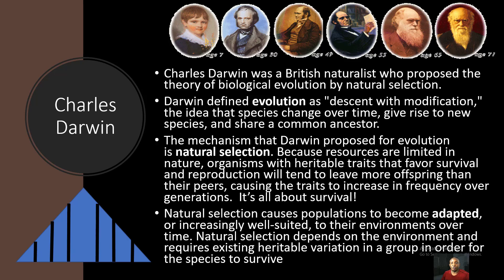So let's discuss the great Charles Darwin. He was a British naturalist who proposed the theory of biological evolution by natural selection. Darwin defined evolution as descent with modification — the idea that species change over time, give rise to new species, and share a common ancestor. The mechanism that Darwin proposed for evolution was natural selection.